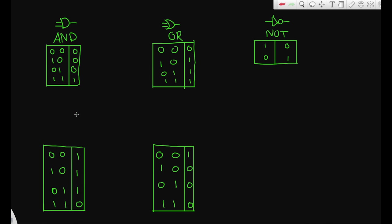In the previous video, we talked about AND, OR, and NOT logic gates. AND is the one that's true when both inputs are true. OR is the one that's true when at least one input is true. And NOT is an inverter — if input is true, output is false; if input is false, output is true.